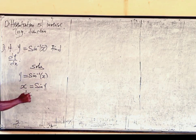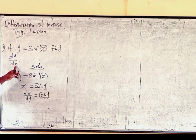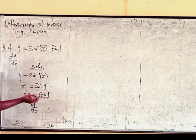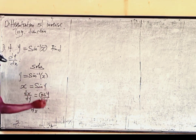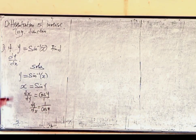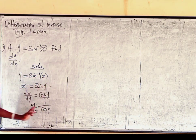So, differentiating both sides with respect to y, we are going to have cos y on the right side. Then we are looking for dy over dx, so we take the reciprocal of both sides — bring the dy up and bring the cos y down. So dy over dx will be equal to 1 over cos y. But the problem is there is no x — the answer cannot be a function of y.